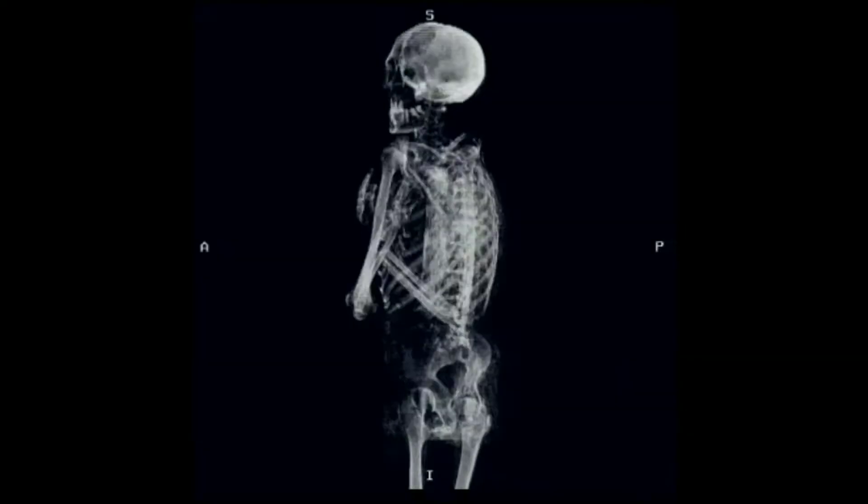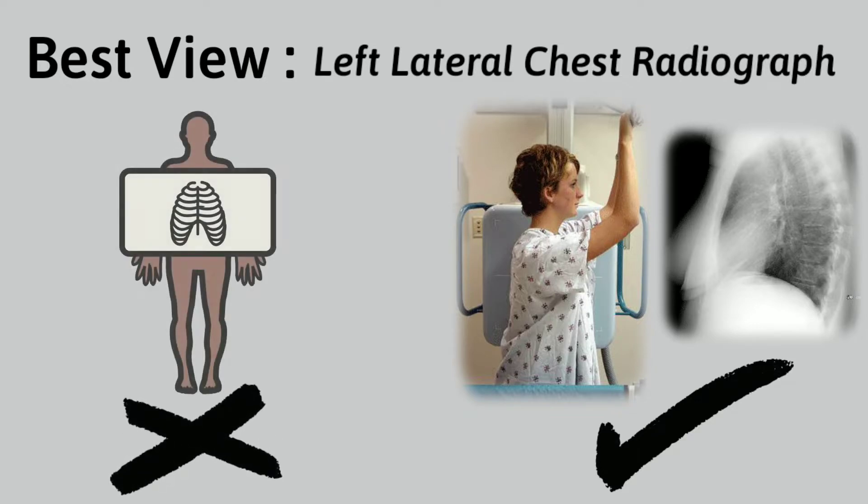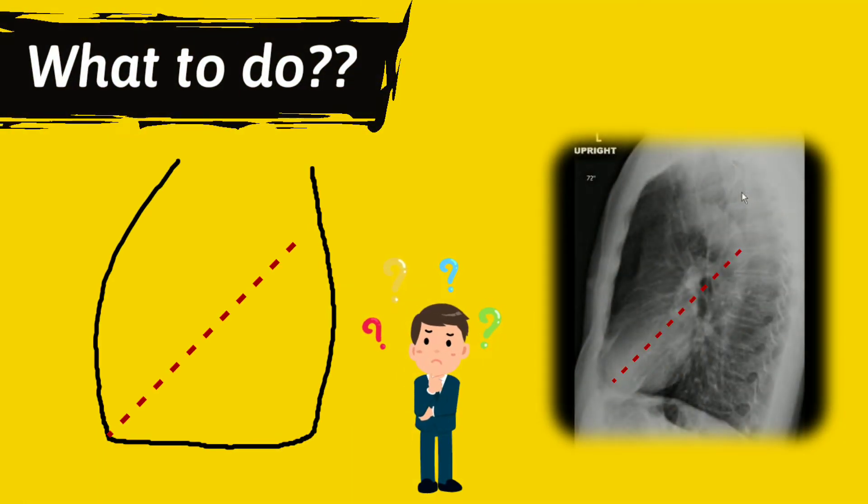But how to find valves in an x-ray? Remember, heart valves are best determined on a lateral radiograph, so don't go for PA or AP view of the chest. For finding them, draw an imaginary line from the apex or carina to the base of the heart.